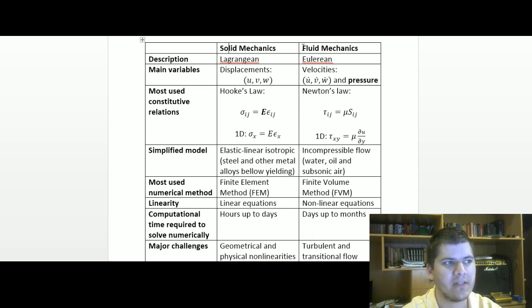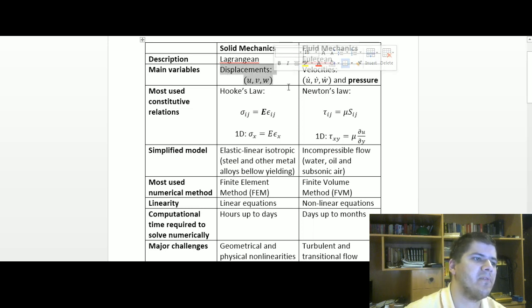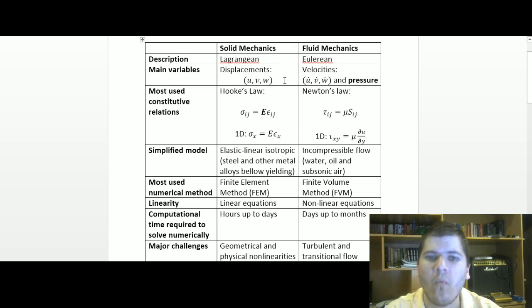Our description in solid mechanics is usually Lagrangian, and fluid mechanics is Eulerian. What does that mean? It means that our main variables in solid mechanics are the displacements, the displacement field u, v, and w - the displacements in x, y, and z directions.